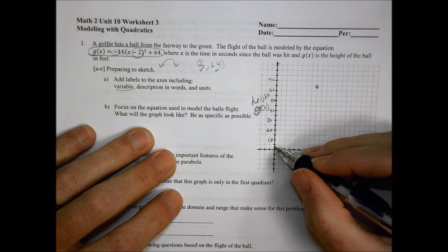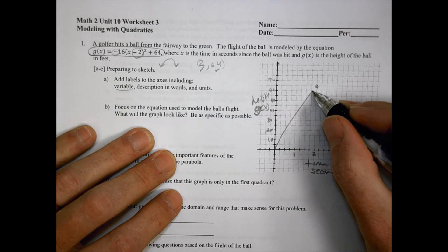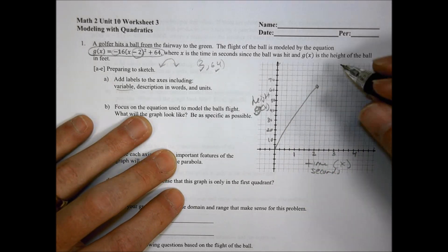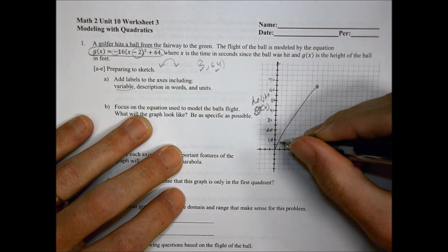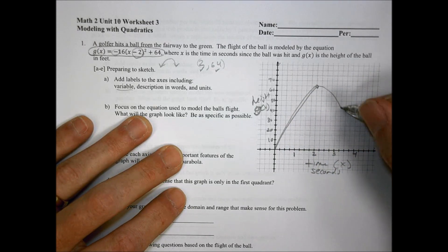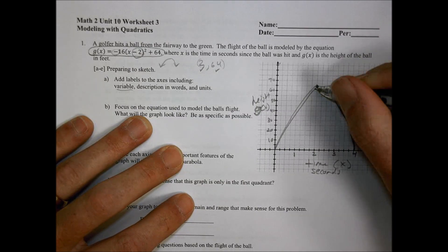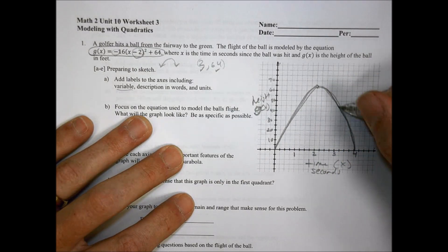So at 64 and 2, I'm going to have my high point right there. That's my maximum value at 2, 64. We're going to start at 0 because the ball is on the ground and not moving. He hits it and it goes up and then it's going to curve back down.